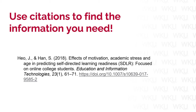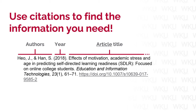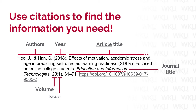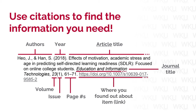To gather the information you need, it can be helpful to view an article's citation, which a database can provide for you. I'm going to briefly click through and show you how the things in this citation relate to what you need for your ILL request. First, you'll see the authors listed, often followed by the year of publication. The first title is going to be your article title, followed by a journal title, which is often in italics. The journal title is always followed by a volume number, as well as an issue number shown right next to the volume. If you see a range of numbers, those are going to be your page numbers. Lastly, citations often provide a link, which you can use in the 'where you found out about this item' field.